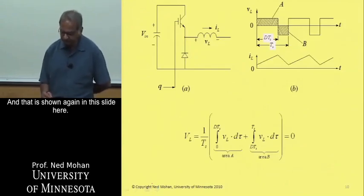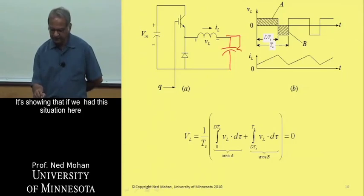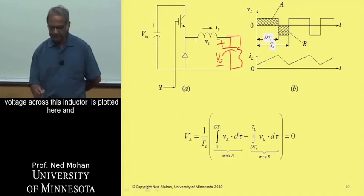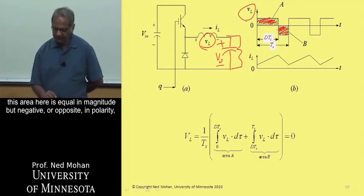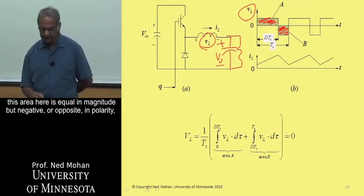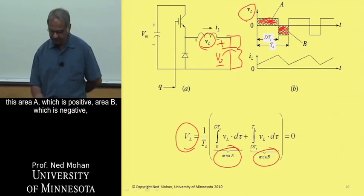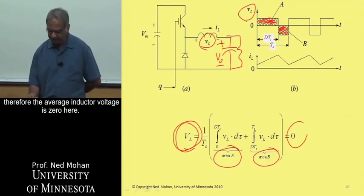This is shown on this slide: given a constant voltage V0, the voltage across the inductor is plotted, and the positive area A and the negative area B are equal in magnitude but opposite in polarity. So the average inductor voltage equals area A plus area B, which sums to zero. Therefore, the average inductor voltage is zero in DC steady state.